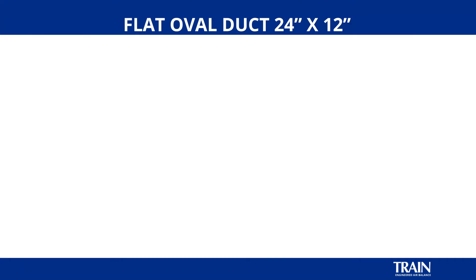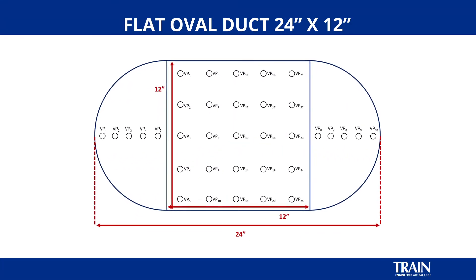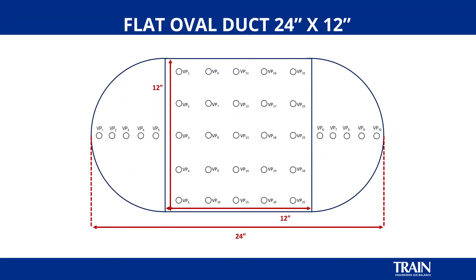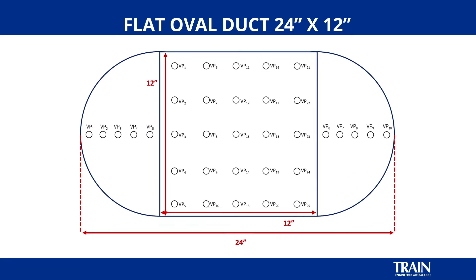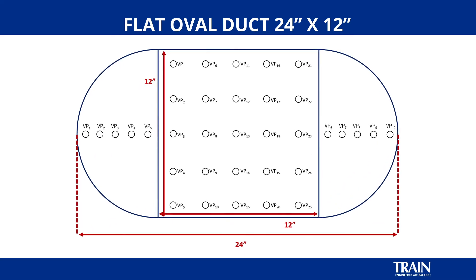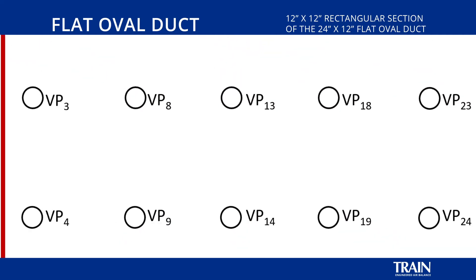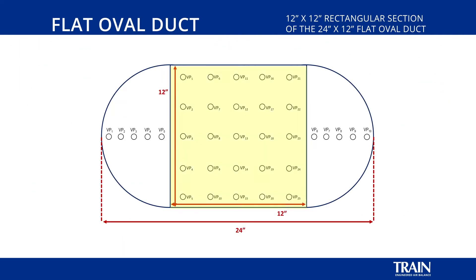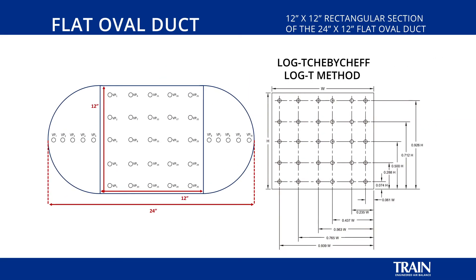For our next real world example, we will be demonstrating how to mark the pitot tube for a 24 inch wide by 12 inch tall flat oval duct. To do this, we're going to be first marking our pitot tube for the rectangular section of the flat oval duct. We will be referencing the log Chebyshev method.